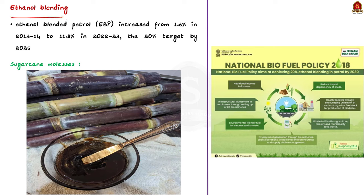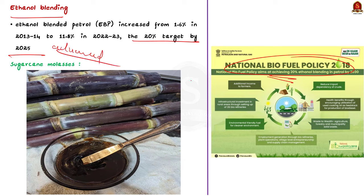Our next topic is ethanol blending. The National Policy on Biofuels notified in 2018 set an indicative target of 20% ethanol blending in petrol by 2030. In 2014, only 1.5% ethanol was blended in petrol. Given encouraging performance since 2014, the 20% target was advanced to 2025–26. The all-India average blending has risen from 1.6% in 2013 to 11.8% in 2022. Ethanol is usually obtained from sugarcane by-products — the sugarcane-based ethanol is preferred in tropical countries like Brazil and India. Ethanol is produced by processing molasses (C-heavy or B-heavy varieties). Sugarcane molasses is a dark, viscous, sugar-rich by-product of sugar extraction.